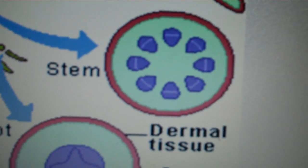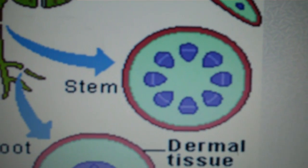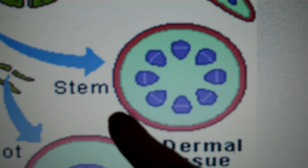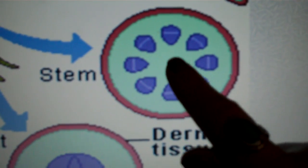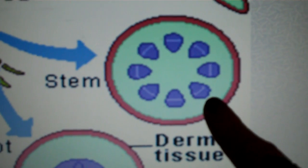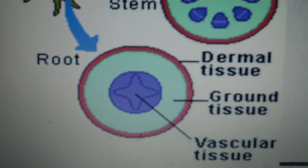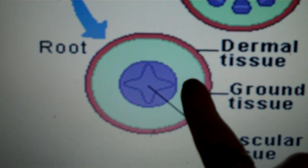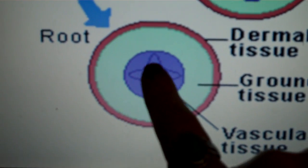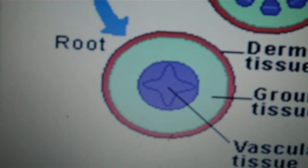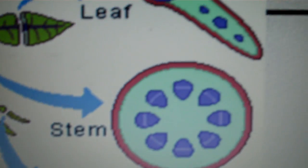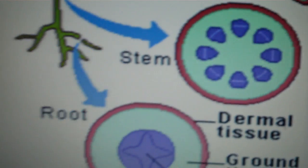We look here at the stem. Again we have the vascular bundles made up of xylem and phloem. We have the dermal tissue, the epidermis on the outside, the pith on the inside, the cortex on the outside. And then in the root we have the dermal tissue, the ground tissue, and the vascular tissue. In the root the vascular tissue combines to form a cylinder as opposed to vascular bundles in the stem.